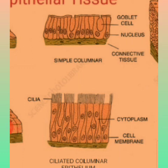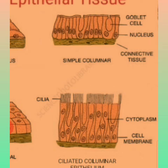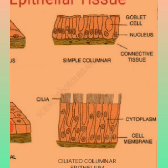The third type is simple columnar epithelium. It consists of elongated cells, as you can see in the diagram. Its function is also secretion of materials, but its site of occurrence is different from cuboidal epithelium. Columnar epithelium is present in the alimentary canal and gall bladder, where it secretes various enzymes and juices for digestion of food and bile in the gall bladder.